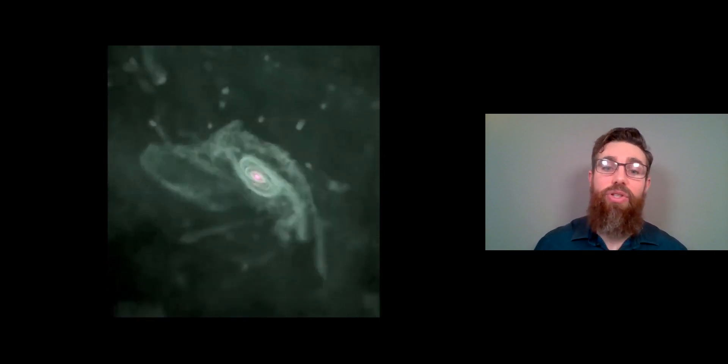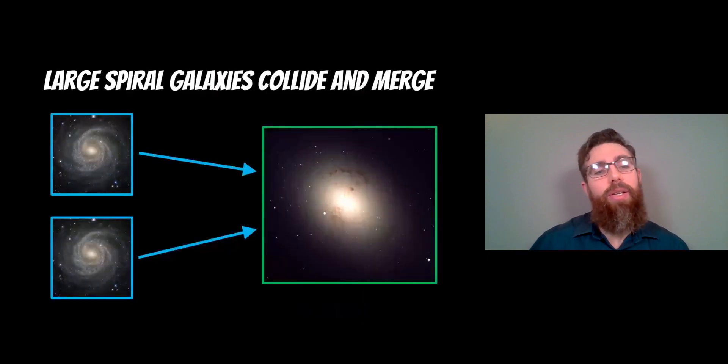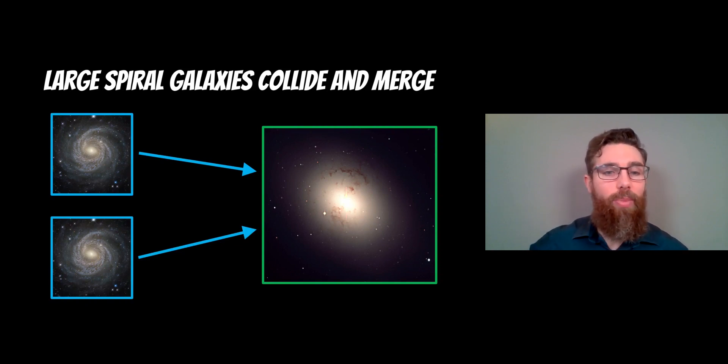That basically increases the star formation, reduces the gas content, and then you're left with a more spherical type of galaxy. So these larger spiral galaxies at the end point form an elliptical galaxy. They have more random motions. They're not necessarily orbiting like a disk. They are redder in color because of older stars. They've got less gas content. These elliptical galaxies don't look the same as a spiral galaxy and they're much bigger.